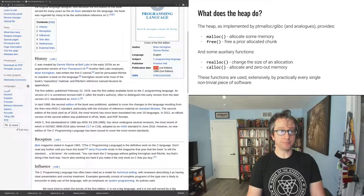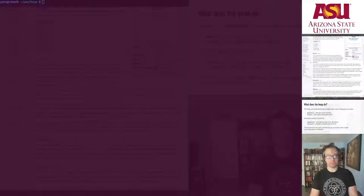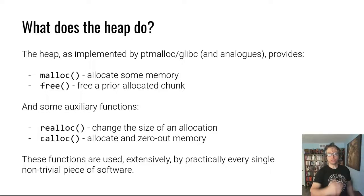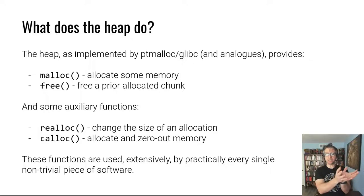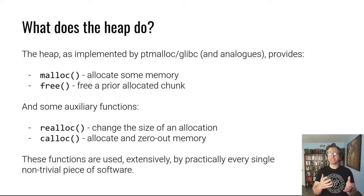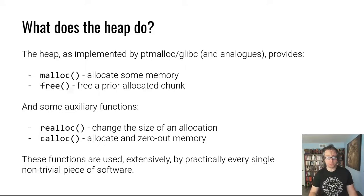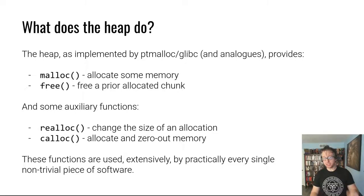Nine years after the K&R book, dlmalloc came onto the scene with a very similar interface. The interface to allocators is malloc and free: use malloc to get a chunk of memory, use free to give it back. There are also auxiliary functions: realloc lets you expand a previous allocation; calloc allocates and zeros out the memory, guarding against uninitialized data disclosure. ptmalloc also has realloc_array, a fancier version of realloc.